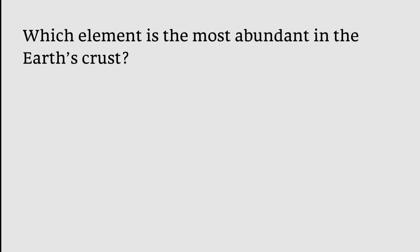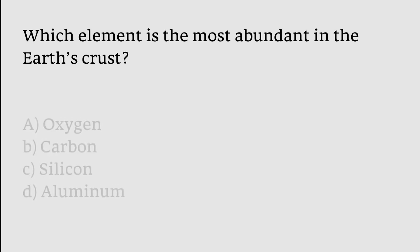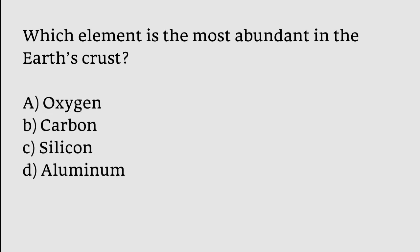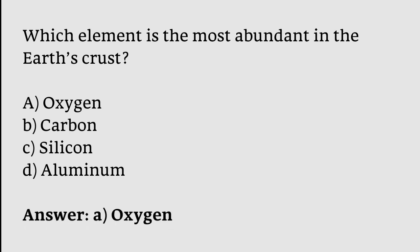Which element is most abundant in the earth's crust? Oxygen, Carbon, Silicon, Aluminium. The correct answer is option A. Oxygen is the most abundant element in the earth's crust.